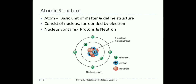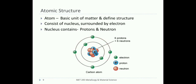When we are dealing with atomic structure — what is atomic structure? Atomic structure means the basic unit of matter. An atom is a basic unit of matter and it defines the structure. It consists basically of a nucleus, which is surrounded by electrons. At the center we have the nucleus; inside the nucleus we have the neutrons and the protons; and surrounding the nucleus we have the negatively charged particles called electrons.